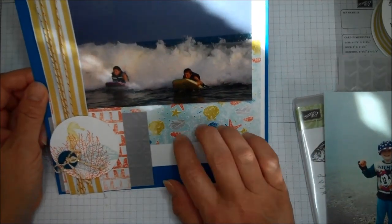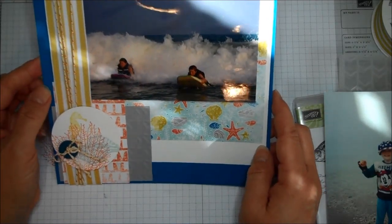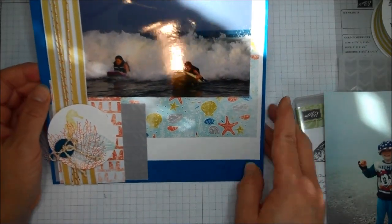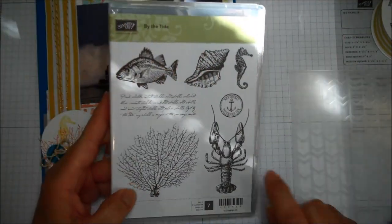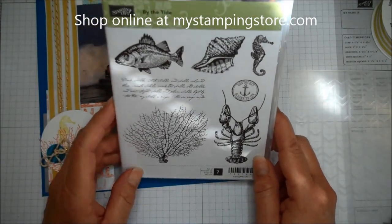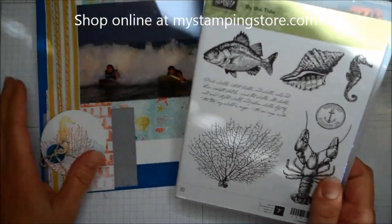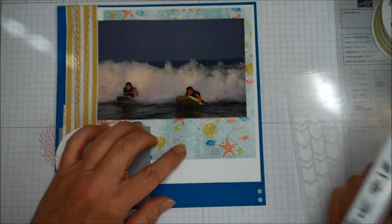So I have a lot of things I want to show you today. I'm making a quick little scrapbook page. This is an 8x8 page, and I'm using the By the Tide stamp set. This is available in the actual annual catalog. I love this stamp set. I think there are lots of options to go along with a page like this, along with this paper that they have.